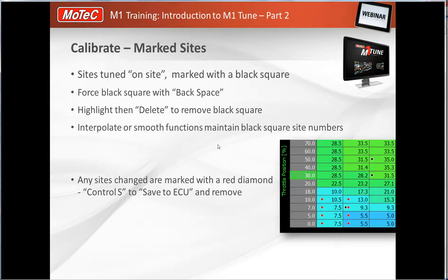Red diamonds mean you've changed sites but haven't saved to the ECU yet; black squares mean you were on-site when you made the change — a well-adjusted site. To clear all black squares, highlight them with Shift and arrow keys and press Delete — this removes the markers, not the map values. Get into the habit of pressing Ctrl+S regularly. If the laptop disconnects without saving, the work stays on the laptop but the ECU reverts to its previous program.